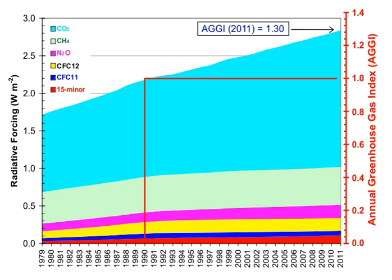Greenhouse gases are those that absorb and emit infrared radiation in the wavelength range emitted by Earth. In order, the most abundant greenhouse gases in Earth's atmosphere are water vapor, carbon dioxide, methane, nitrous oxide, ozone, chlorofluorocarbons, and hydrofluorocarbons.